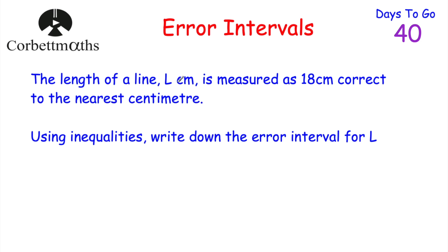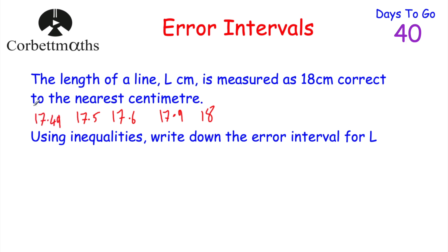Let's start off by considering what length the line could be. For instance, it could be exactly 18 centimetres. It could be 17.9 centimetres, because that would round up to 18 centimetres. It could be 17.6 centimetres, or even 17.5 centimetres, but it couldn't be anything below this. For instance, it couldn't be 17.49 centimetres, because that would round down to 17 centimetres rather than up to 18. So the length of the line has to be greater than or equal to 17.5 centimetres.